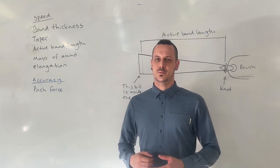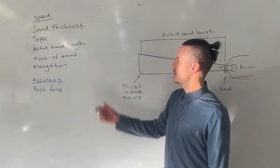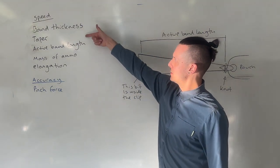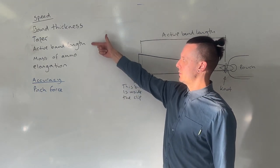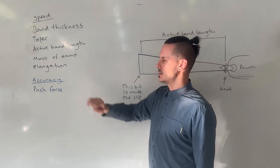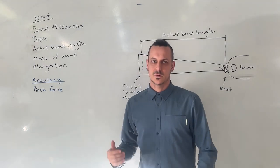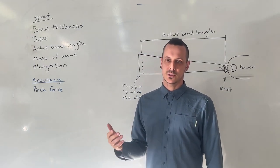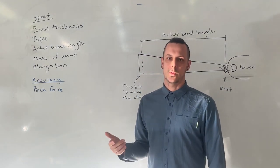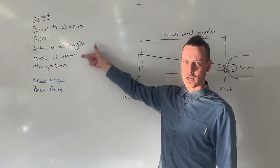Okay, so now we know that speed is very important. Let's look at a few things that can affect the speed of your shot. We've got the thickness of the bands, the taper of those bands, the length of your active band length, the mass of your ammo, and the elongation of those bands. Band thickness: generally thicker bands contract slower but with more force, so thick bands will shoot large ammo slowly relatively speaking.